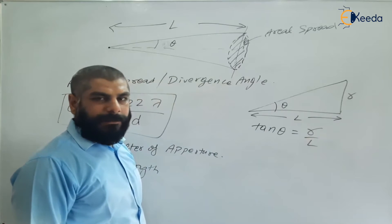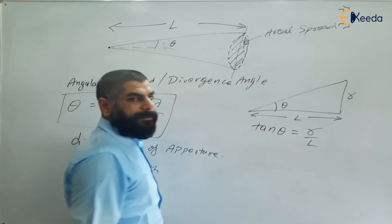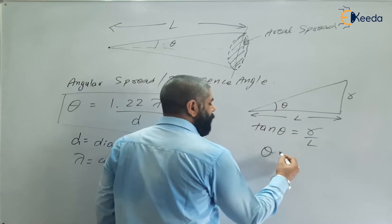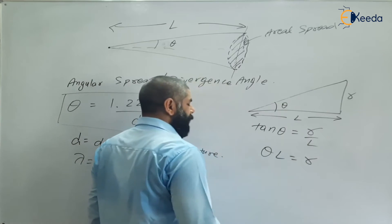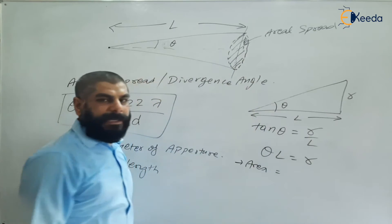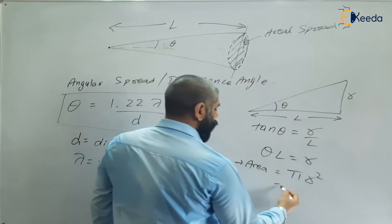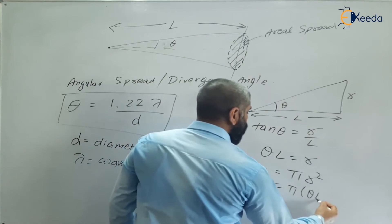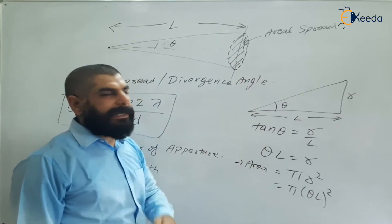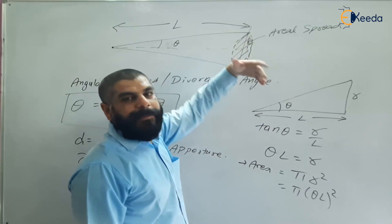For small values of theta, tan θ ≈ θ, so θ = R/L, giving radius R = θL. The area of the circular spot is given by the area of a circle: A = πR² = π(θL)². If the diameter is needed, it is simply twice the radius, D = 2R = 2θL.